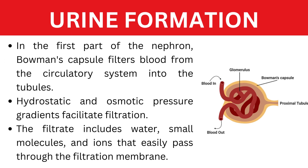Now moving towards the formation of urine, which starts from the functional unit of the kidney, the nephron. In the first part of the nephron, Bowman's capsule filters blood from the circulatory system into the tubules. Hydrostatic and osmotic pressure gradients facilitate filtration. The filtrate includes water, small molecules, and ions that easily pass through the filtration membrane.